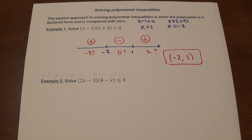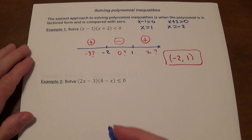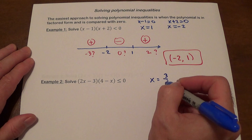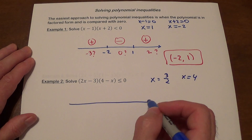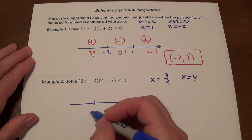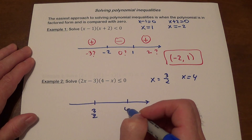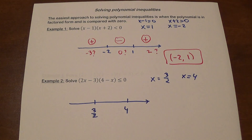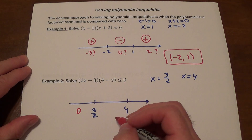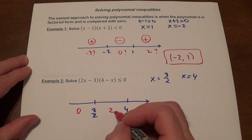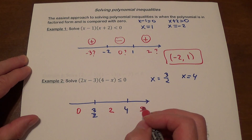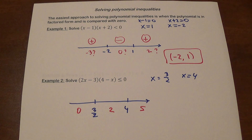Next example. There will be two numbers: x equals three halves and x equals four. We make our number line and plot those two points — three halves is less than four. We need to pick three points. Zero is a nice number for the left interval, two works for the middle interval, and five for the right interval.